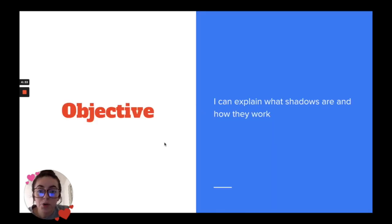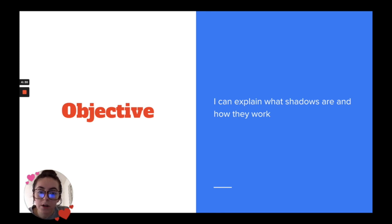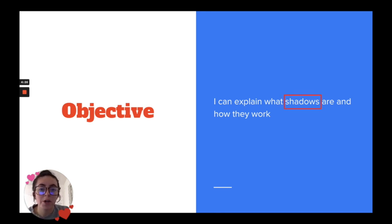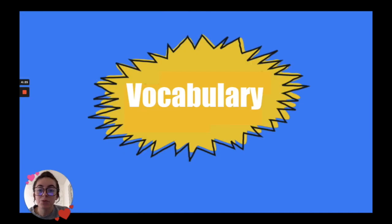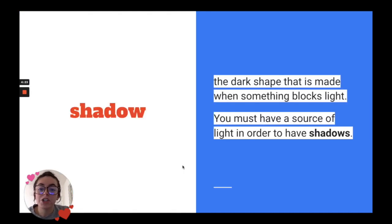Today's objective is that you can explain what shadows are and how they work. But wait, what are shadows? Good question. Let's review our vocabulary: a shadow is the dark shape that is made when something blocks light.